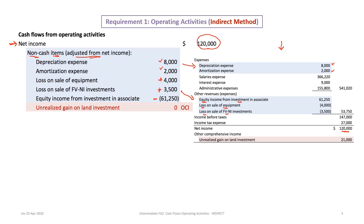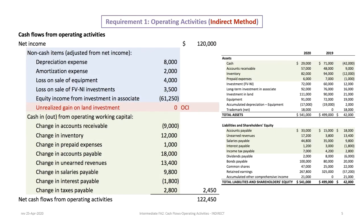I've included one other item here just for illustration purposes — an unrealized gain on land investment that's included in the other comprehensive income section. Notice that we do not start our net cash flow statement with comprehensive income; we start with net income, which is before comprehensive income. This unrealized gain on land investment doesn't belong here — I've shown it only to illustrate that it's zero in our reconciliation.